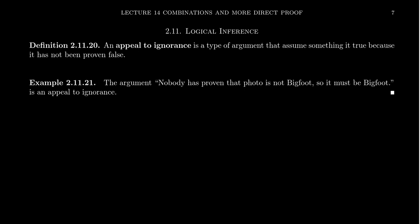So the first fallacy we're going to talk about here is commonly referred to as the appeal to ignorance. An appeal to ignorance is any type of argument that assumes something is true because it hasn't been proven false. Or conversely, you assume it's false because it hasn't been proven true yet. An example of that would be something like, nobody has proven that this photo is not Bigfoot. So it must be Bigfoot. No one has proven the statement false. Therefore, the statement must be true.